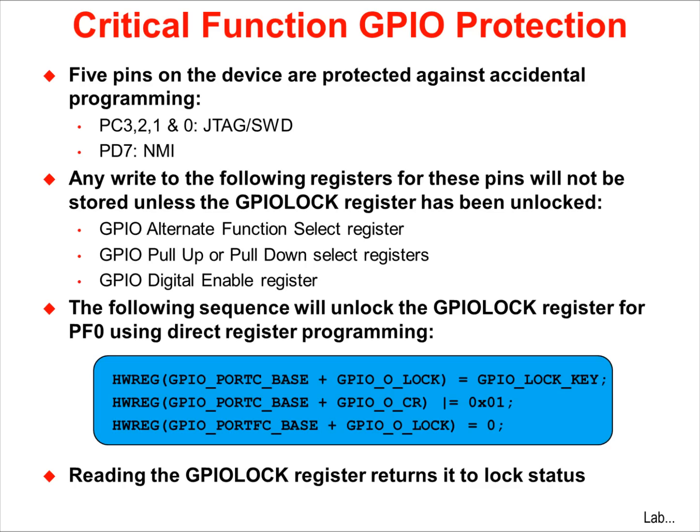pull-down, or digital enable registers for these pins will not be stored unless the GPIO lock register has been unlocked. The coding sequence shown uses direct register writes to unlock the GPIO lock feature of port C, pin 0. Any read of the GPIO lock register will return it to a locked state.